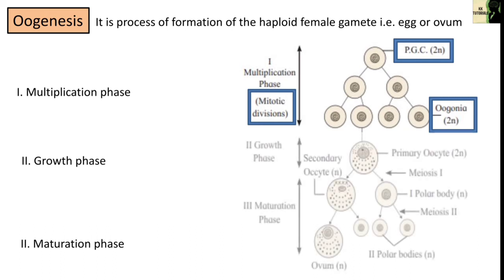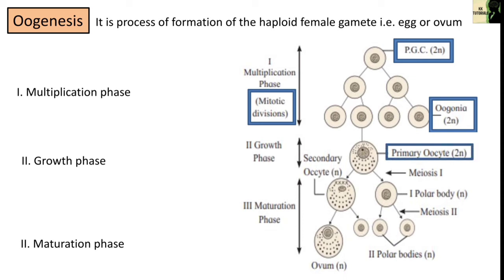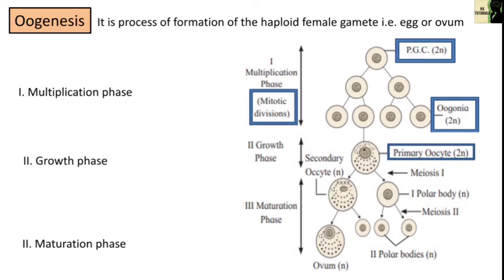During the growth phase, some of the oogonia stop dividing and begin to increase in size, forming primary oocytes. Cellular organelles like endoplasmic reticulum, Golgi apparatus, and mitochondria increase in number. In the maturation phase, the process is initiated prior to the birth of the female baby. The primary oocytes enter the maturation phase which includes meiotic division. The diploid primary oocyte undergoes meiosis 1 to form two haploid daughter cells, both with 23 chromosomes. Due to unequal division of cytoplasm, one is a large cell called the secondary oocyte and the other is a small cell called the first polar body.